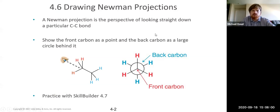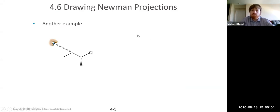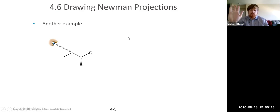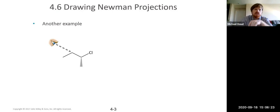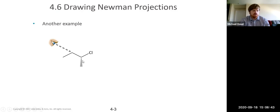Now let's do a practice problem. You can build a model of this compound and use it to help draw the Newman projection. I recommend you pause the video and try first. This is a butane — four carbons. There's a chloro on the third carbon. Carbon one is closest to you. There's a methyl group pointing down, and another methyl group pointing into the plane away from you. The methyl group is down and the chlorine group is up as you orient yourself looking down the C2-C3 axis.